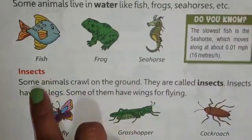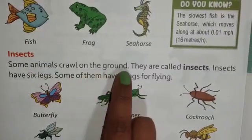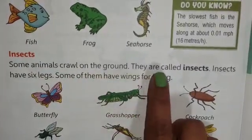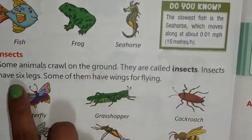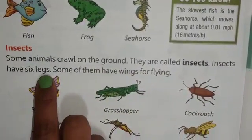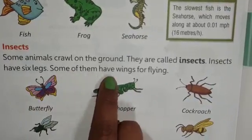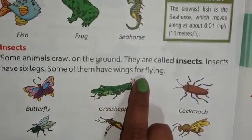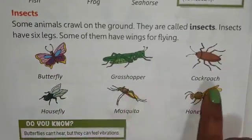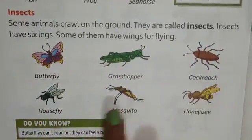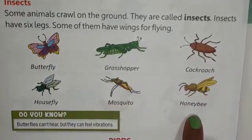Insects. Some animals crawl on the ground — they are called insects. Insects have six legs. Some of them have wings for flying, like butterfly, grasshopper, cockroach, housefly, mosquito, and honeybee.